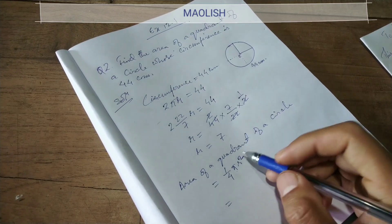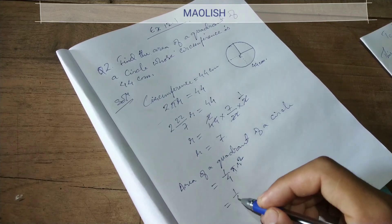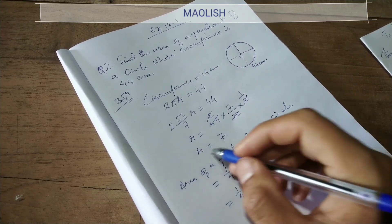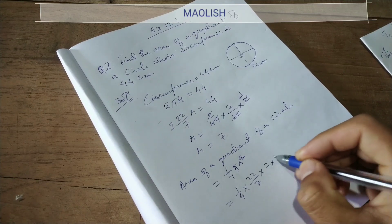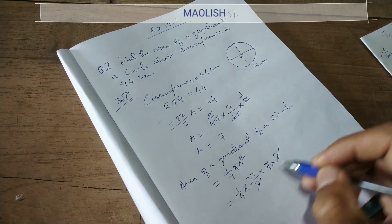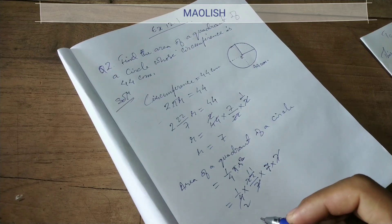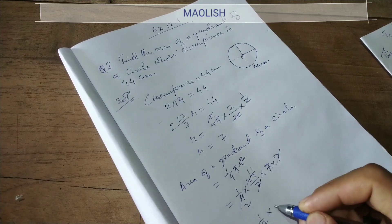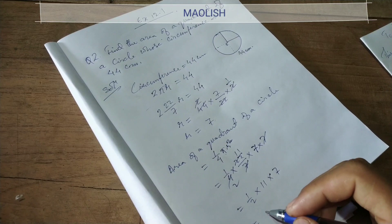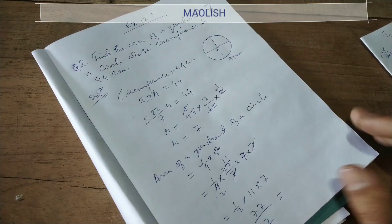Quadrant 1 by 4, so area of a circle is pi r square. 1 by 4 into pi value 22 by 7 into r square. r is 7 into 7. Here 7 cancels, 2 to 11. So 1 by 2 into 11 into 7, so 77 by 2.